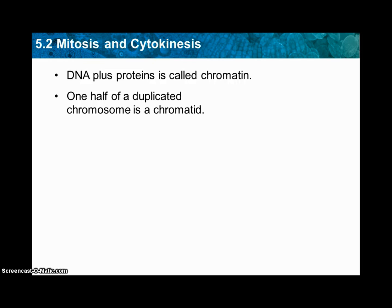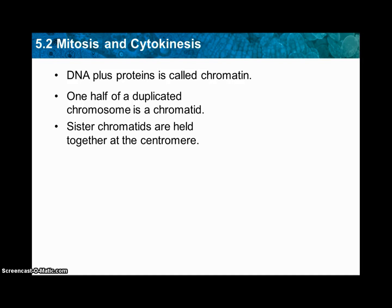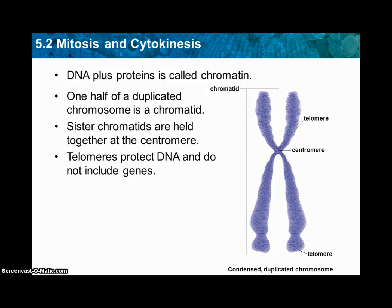DNA plus proteins is called chromatin. The next term — half of the duplicated chromosome is called a chromatid, so if we cut it in half, that's going to be the chromatid. Sister chromatids are held together by the centromere, which is right in the middle. Telomeres protect DNA, do not include genes, and are located at the ends — they stop it from combining with other DNA. So we have the chromatid as the half, the centromere in the middle, and the telomeres at the ends.